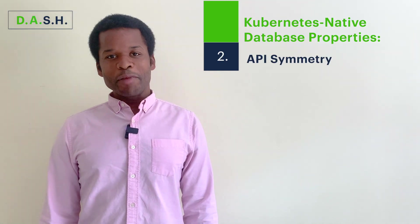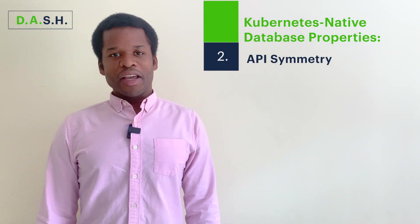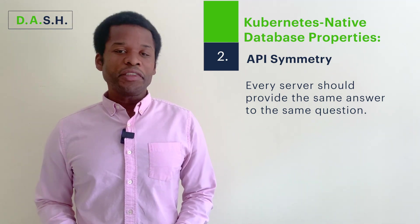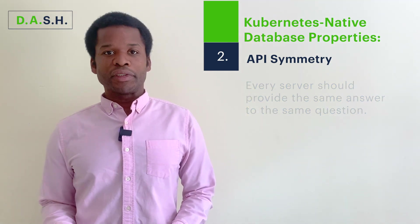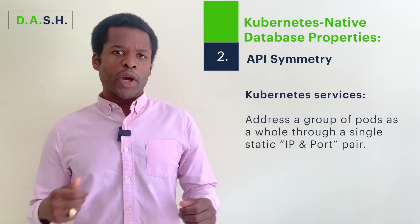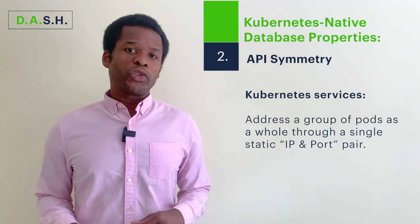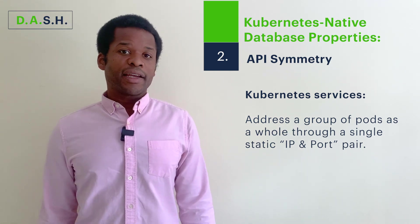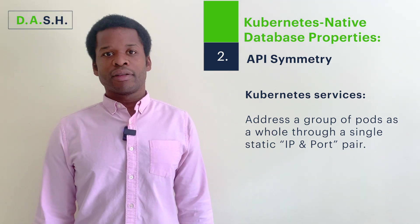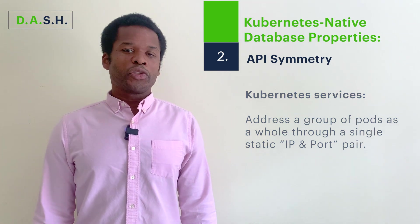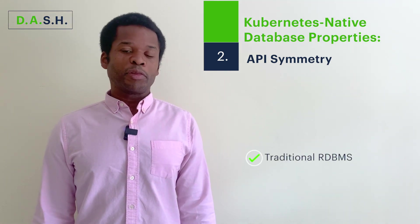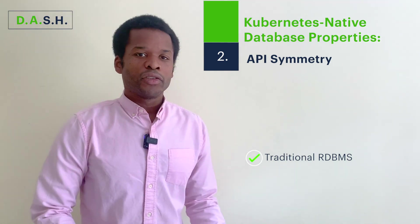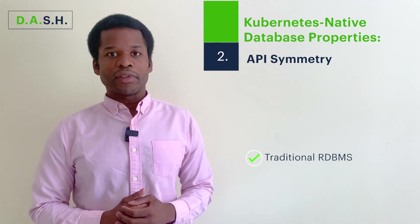Now onto the second property: API symmetry. Every server in a database should provide the same answer to the same question. This is important because of Kubernetes services, which serve as a routing layer in Kubernetes, allowing clients to address a group of pods as a whole through a single static IP and port pair. Interestingly, traditional relational databases actually perform better than NoSQL systems here, because when all queries are being sent to one machine, you'll get the same result every time.